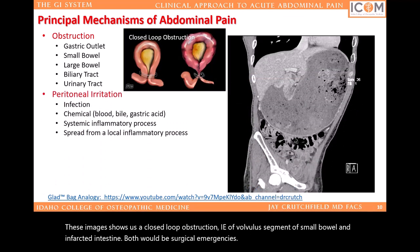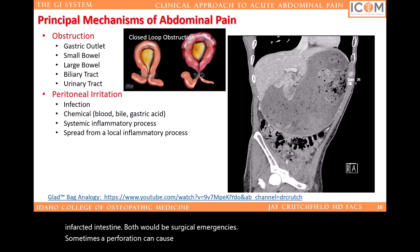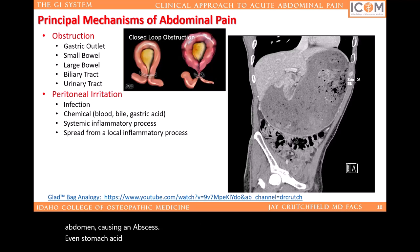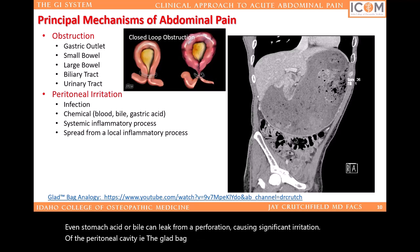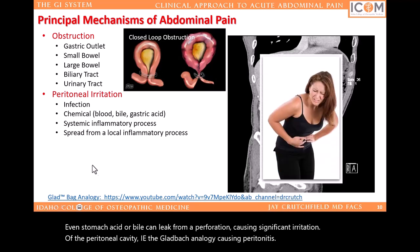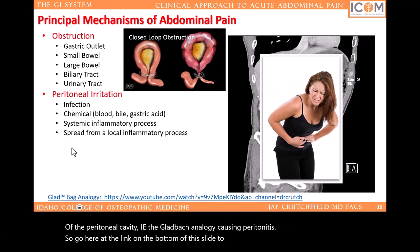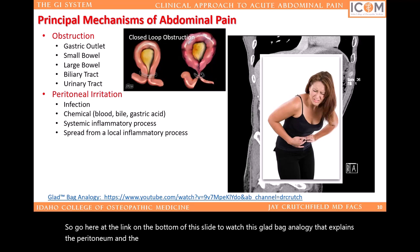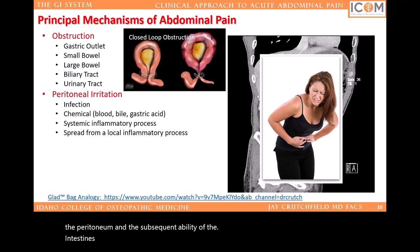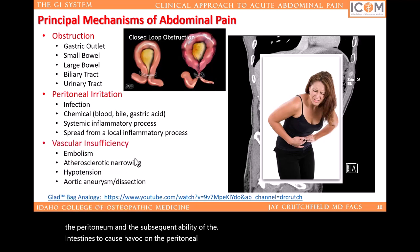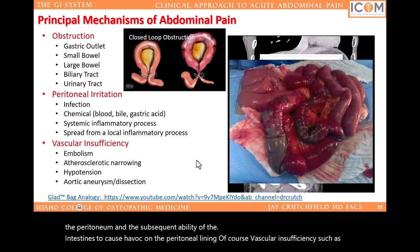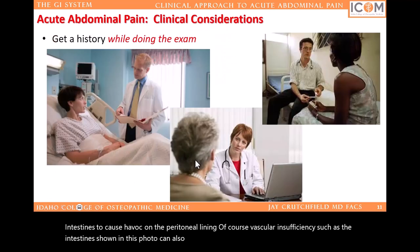Sometimes a perforation can cause feces, blood, or bacteria to gain free access to the abdomen, causing an abscess. Even stomach acid or bile can leak from a perforation causing significant irritation of the peritoneal cavity — the Gladbag analogy — causing peritonitis. Go to the link at the bottom of this slide to watch this Gladbag analogy that explains the peritoneum and the subsequent ability of the intestines to cause havoc on the peritoneal lining. Of course, vascular insufficiency, such as the intestines shown in this photo, can also be a source of acute abdominal pain.